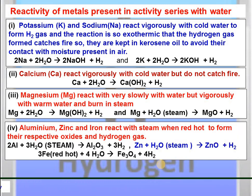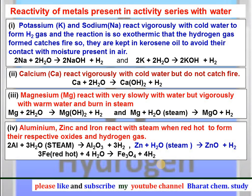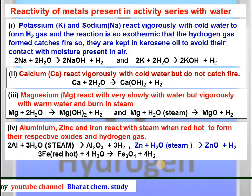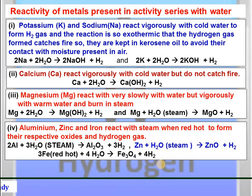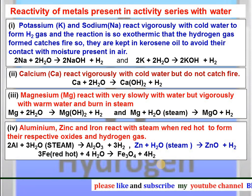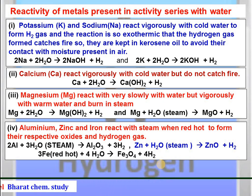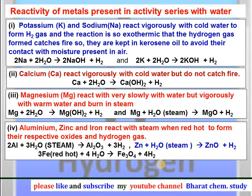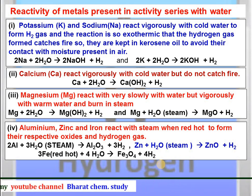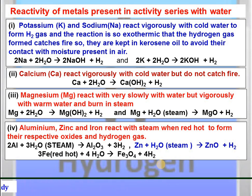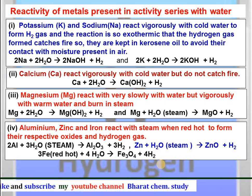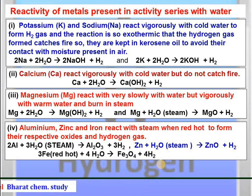Aluminium, zinc, and iron react with steam. Iron reacts when it is red hot to form their respective oxides and hydrogen gas. The equation for aluminium: aluminium reacts with steam to produce aluminium oxide and hydrogen. Zinc reacts with steam to form zinc oxide and hydrogen. Iron reacts with steam only when red hot and gives Fe3O4, which is a mixed oxide, along with hydrogen gas. Balancing these equations is very important, so practice them yourself.